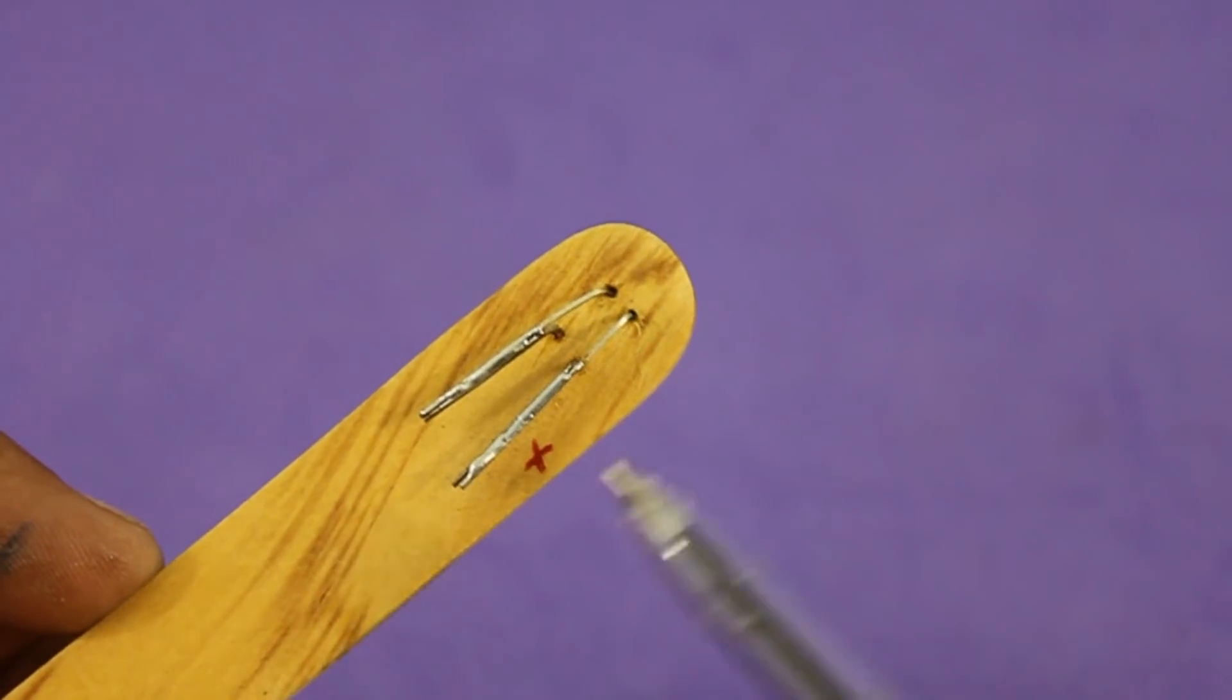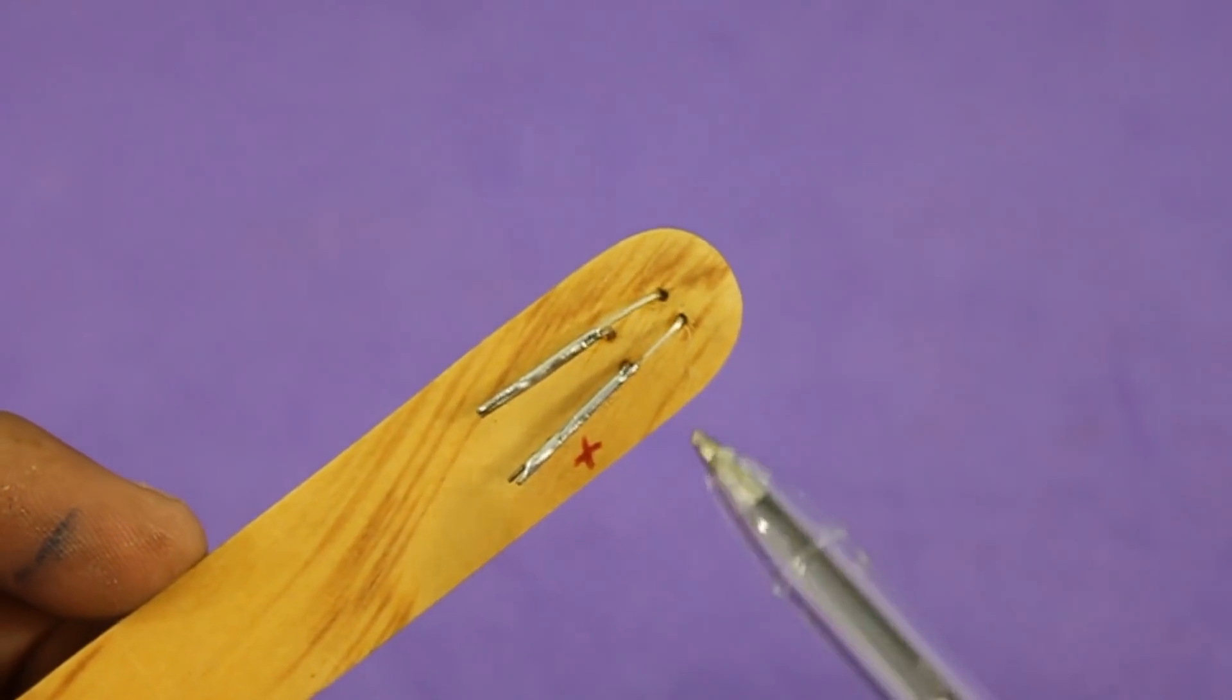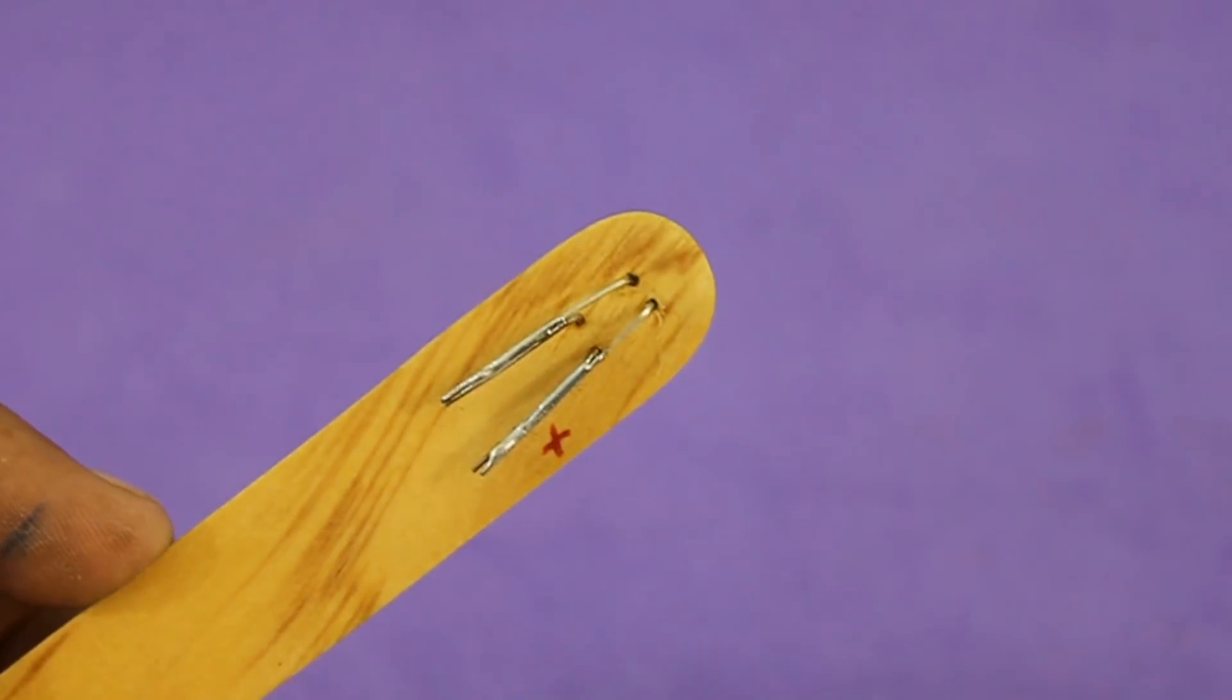Mark the positive leg of the green LED and there we will connect the resistors, the switch, and the positive probe.